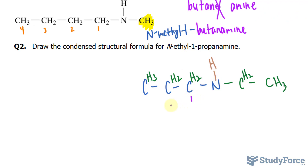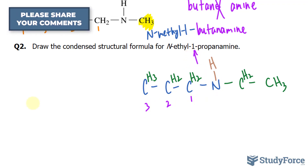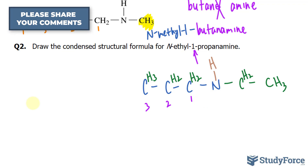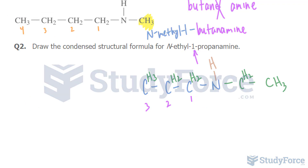Notice that this is C1, C2, C3. Nitrogen is connected to the first carbon, hence this part. In the next video we'll be discussing how to write the common names of amines. We'll see you soon.